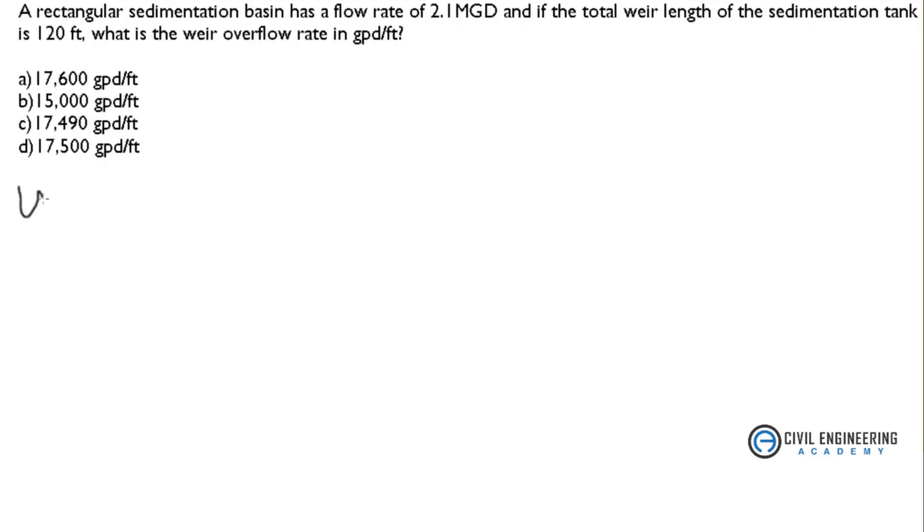We know the formula: weir overflow rate WOR equals flow rate Q divided by length L, the total weir length. It's a direct problem. So we have all values here. We know the flow rate is 2.1 million gallons per day, and our length is 120 feet.